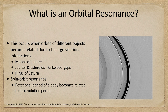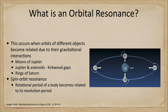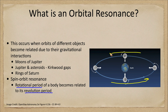That was one type of resonance. Let's look at another one associated with our own moon — what we call a spin-orbit resonance. Our moon is in a spin-orbit resonance with the Earth, which is when the rotational period of a body becomes related to its revolution period around the central object. Because these are locked together, the moon always keeps the same side pointing toward Earth wherever it is in its orbit.